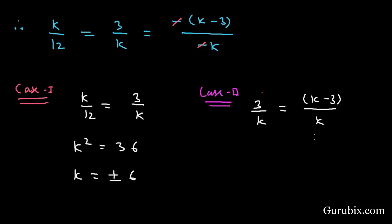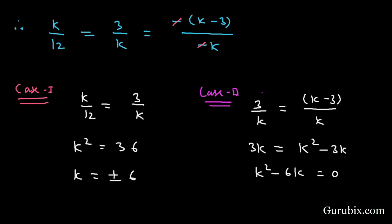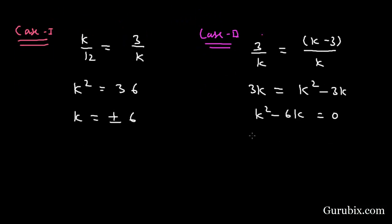In case two: 3/k = (k + 3)/k, which gives k² - 6k = 0, so k(k - 6) = 0, meaning k = 0 or k = 6.